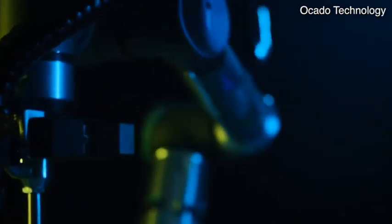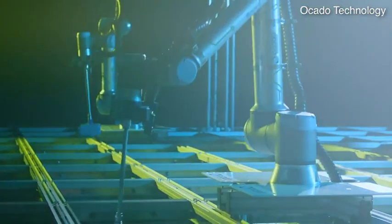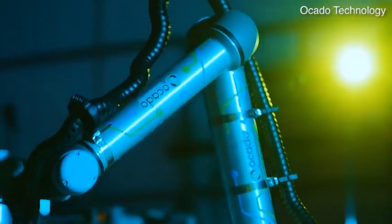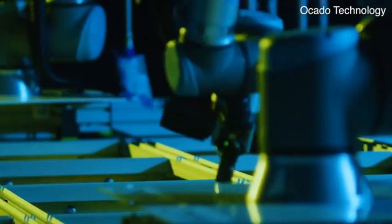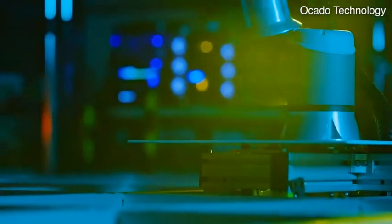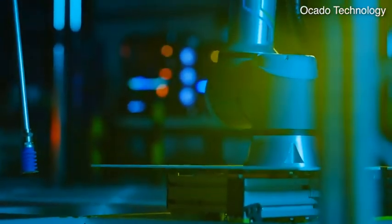Introducing Ocado's state-of-the-art robotic pick and pack solution made for the demanding needs of the grocery sector. Designed for efficiency, on-grid robotic pick solves one of the most complex fulfillment challenges: automating the picking and packing of grocery orders.